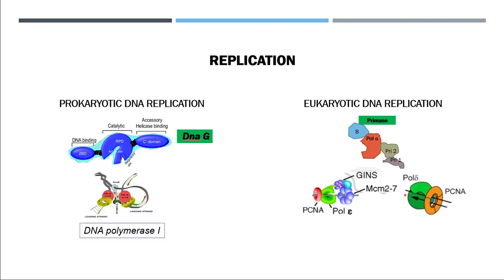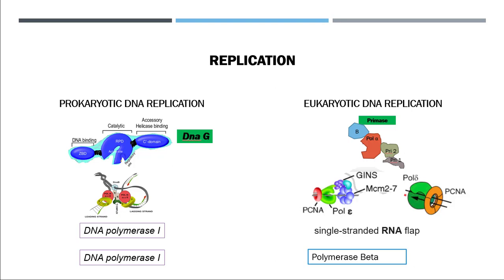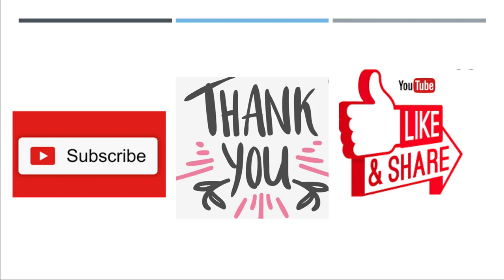For RNA primer removal, prokaryotes use DNA polymerase 1, while in eukaryotes the RNA primer is removed by forming a single-stranded RNA flap. DNA polymerase 1 in prokaryotes replaces the RNA primer with DNA, while in eukaryotes this is done by polymerase beta. The termination processes are also different, but I didn't discuss termination in detail here. Thank you very much — if you like this video please hit the like button and subscribe to my channel.